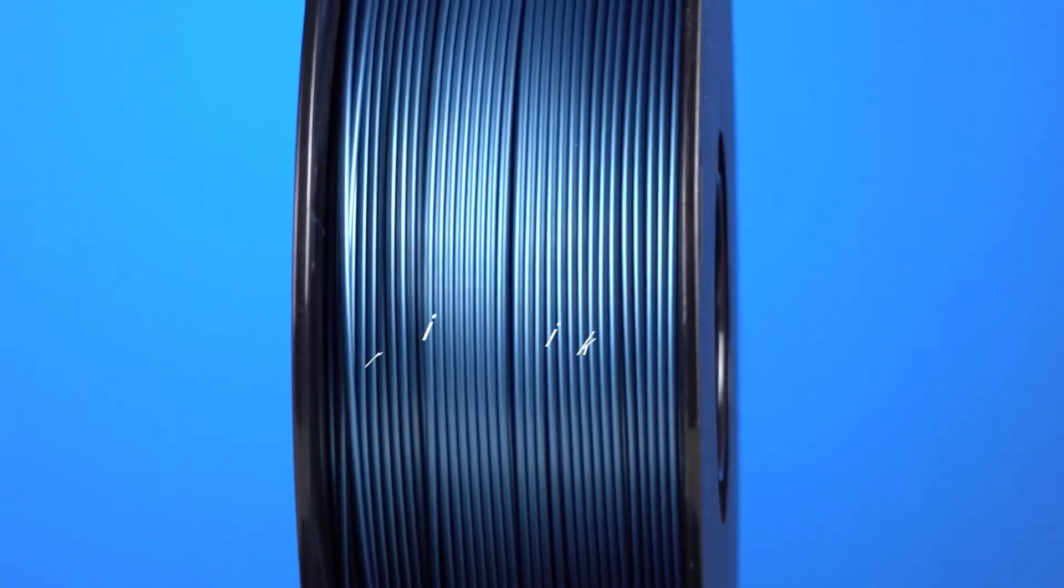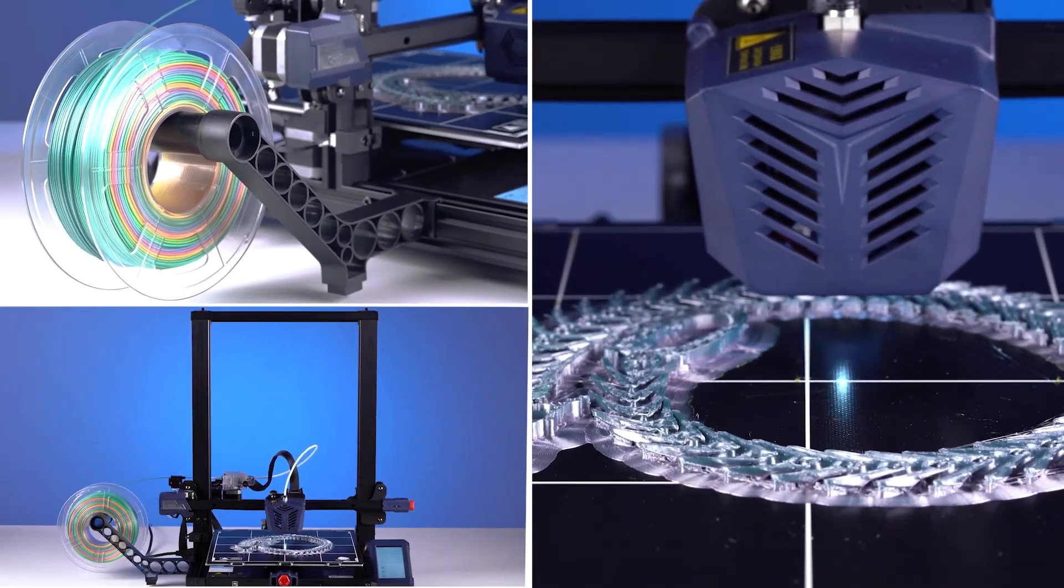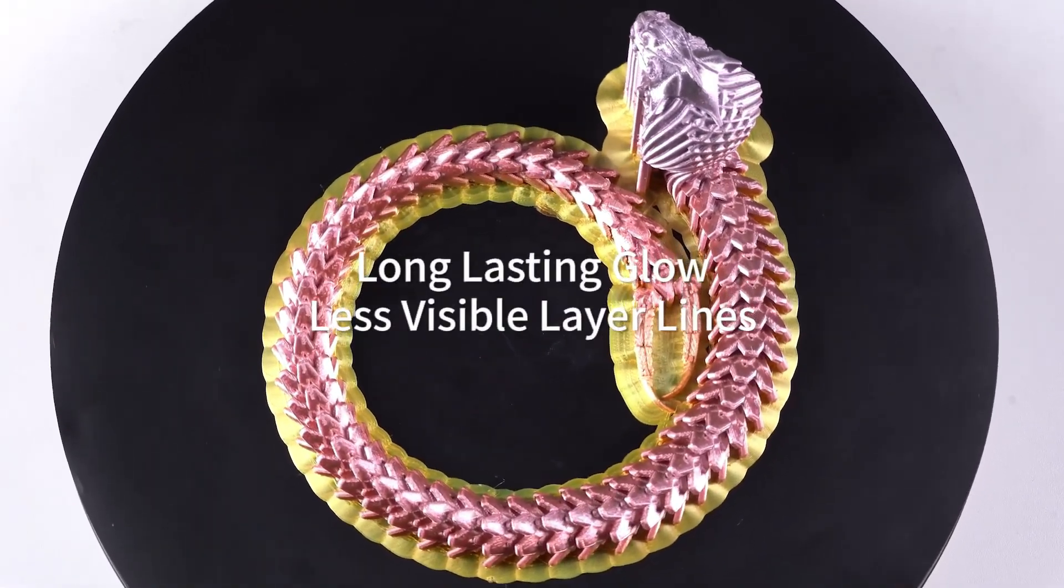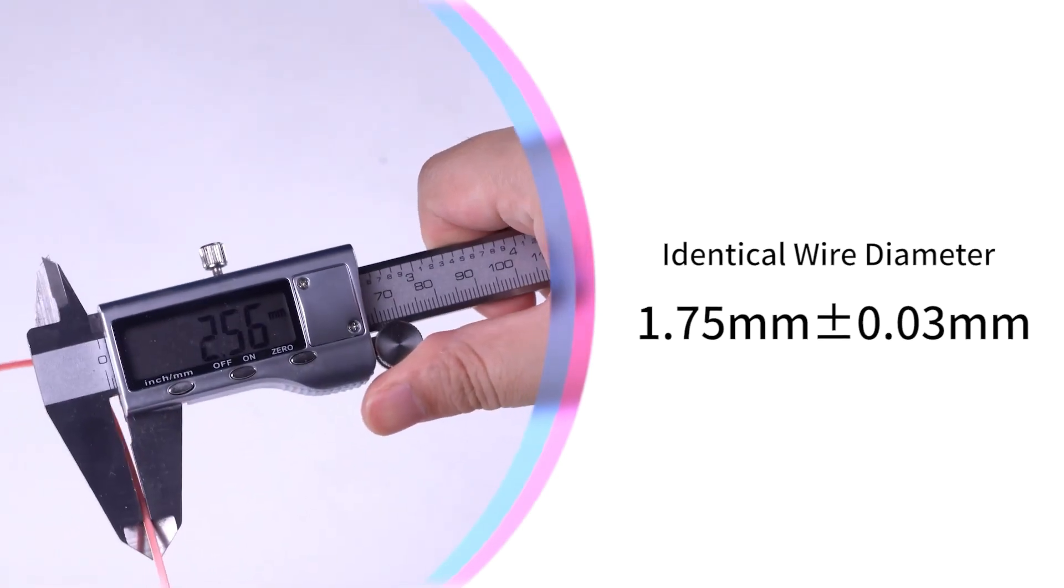So let's talk about what type of prints you might use PLA for versus PETG. PLA is ideal for prototypes, decorative items, and parts that require high precision and a good surface finish. It is best suited for indoor applications and low stress parts.